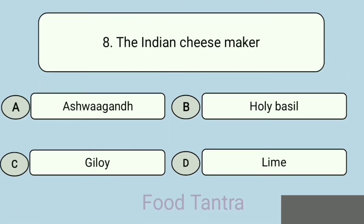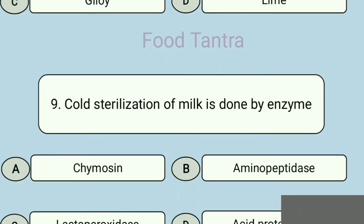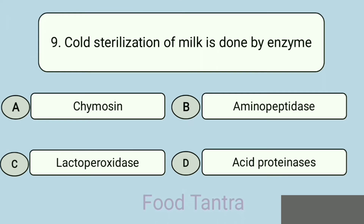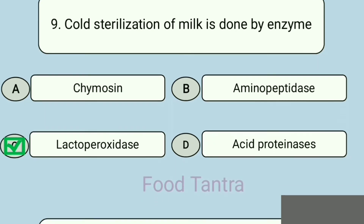Question 8: The Indian cheesemaker — Option A: Ashwagandha. Option B: Holy basil. Option C: Giloy. Option D: Lime. Correct answer: Option A, Ashwagandha. Question 9: Cold sterilization of milk is done by which enzyme? Option A: Chymosin. Option B: Aminopeptidase. Option C: Lactoperoxidase. Option D: Acid proteinases. Correct answer: Option C.